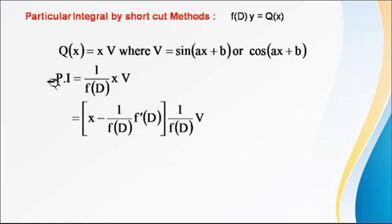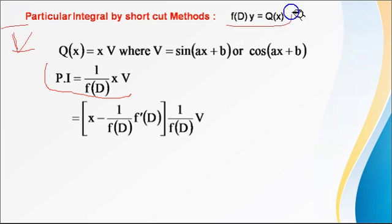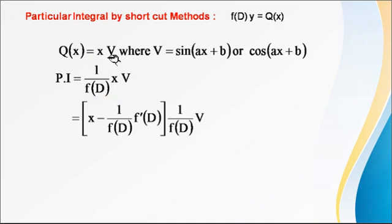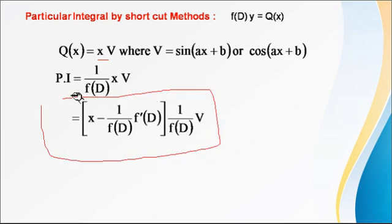So how to find out the PI? This is the fifth method. In this case, this is the general form of a linear differential equation: f(D) of y equals Q(x). In case of Q(x) equal to x into v, how to find out the PI? So PI equals 1 upon f(D) into Q(x), where Q(x) is x into v.